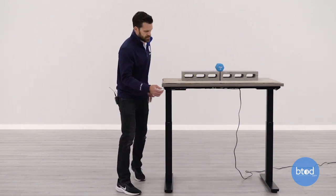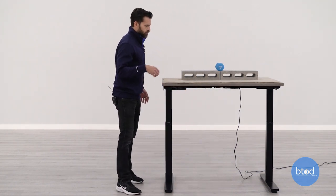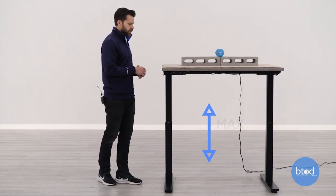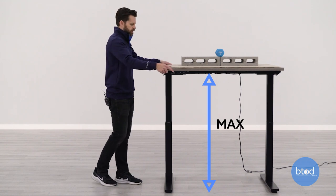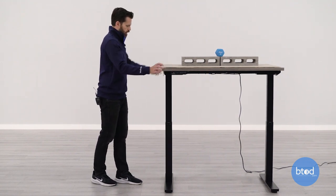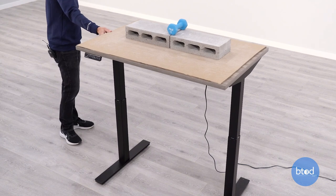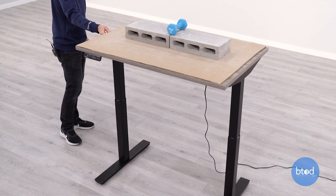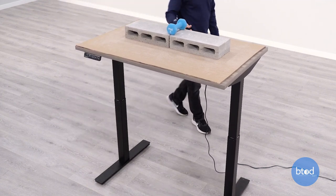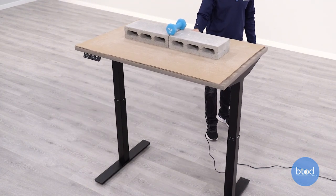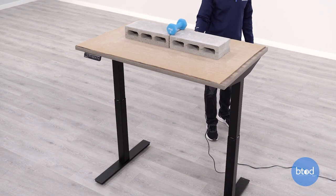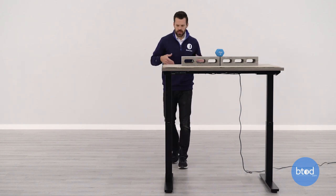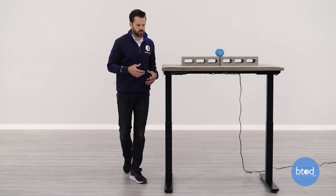Now when we max this desk out, we're going to take this up to that 48 and a half inch mark and we'll see how it performs here. This is going to be the weakest point for all standing desks. And that's definitely true for the autonomous core product because there is more motion there. Now front to back rocking. Same thing.